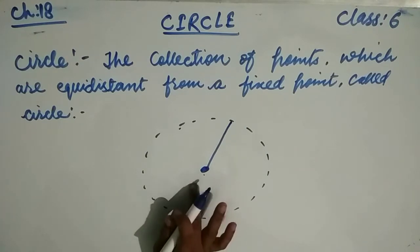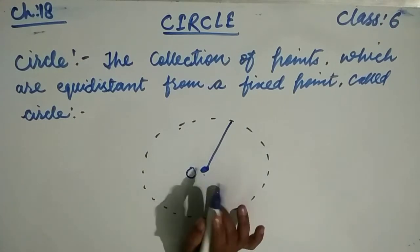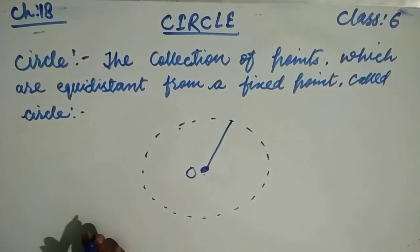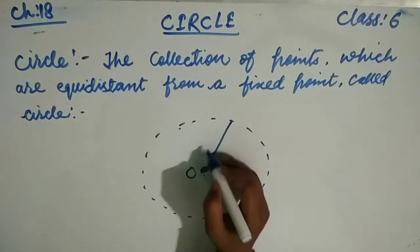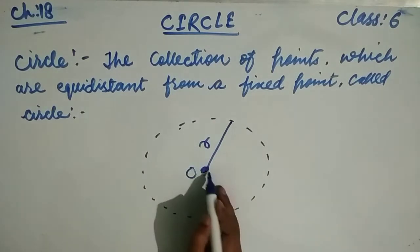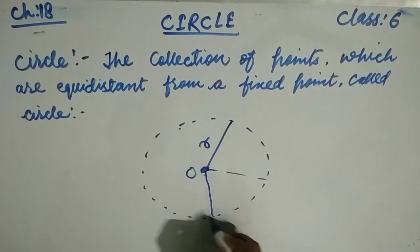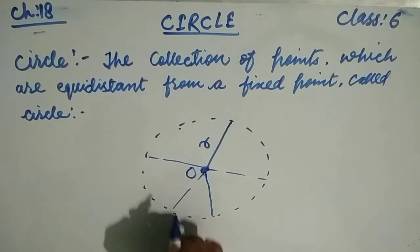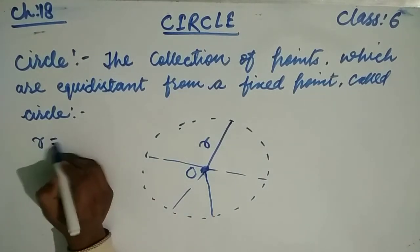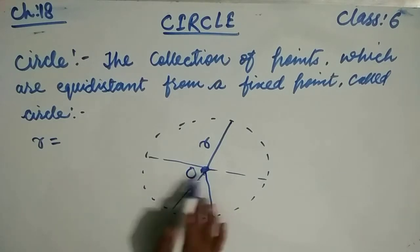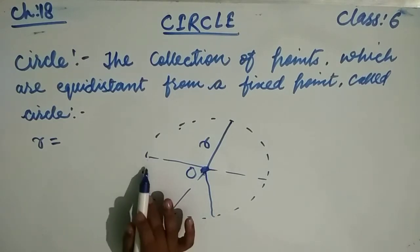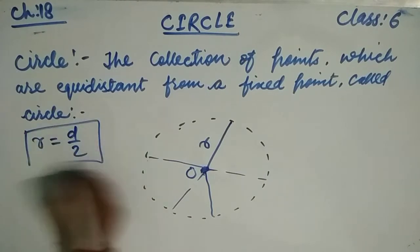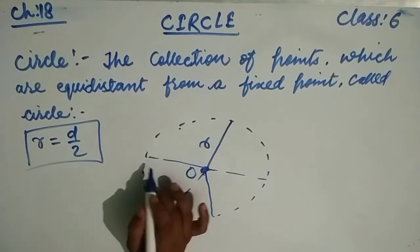This fixed point is known as the center of the circle, denoted as O. The constant distance from the center to any point on the circle is called the radius. The radius r is the constant distance from the center to the circumference. So r is equal to d divided by 2.